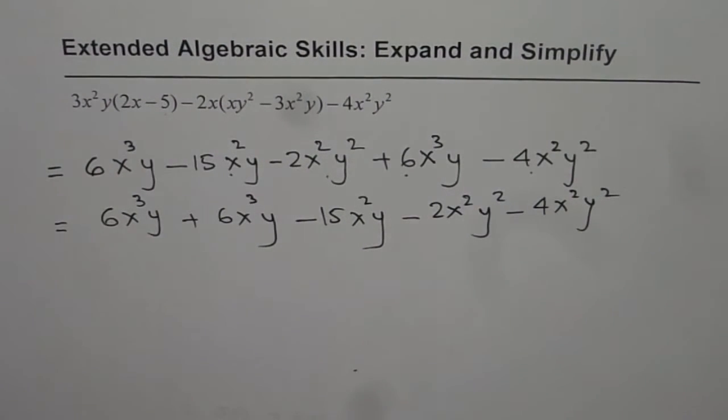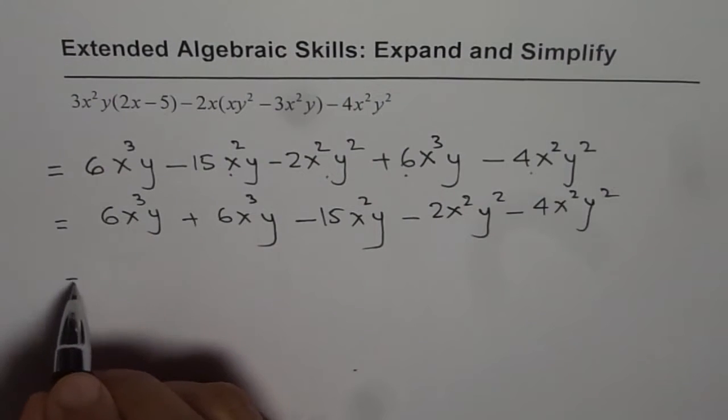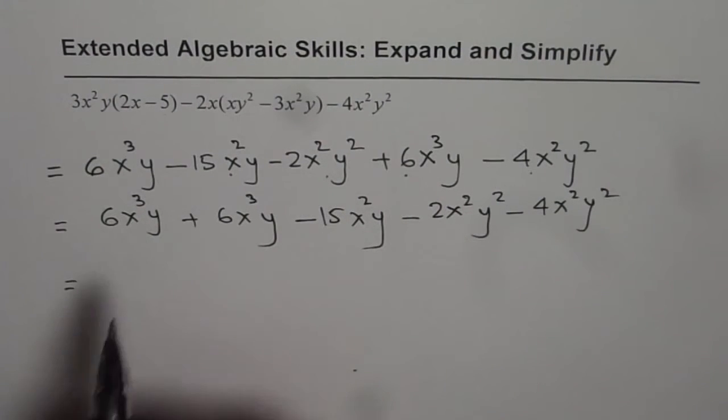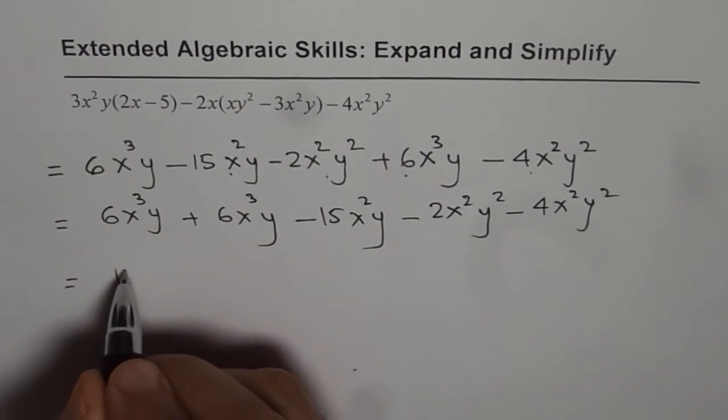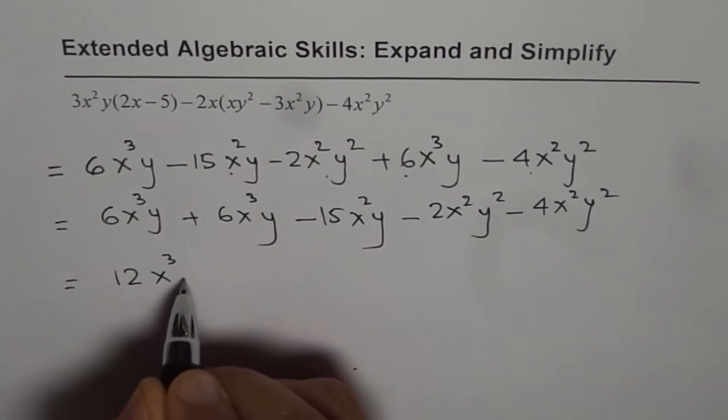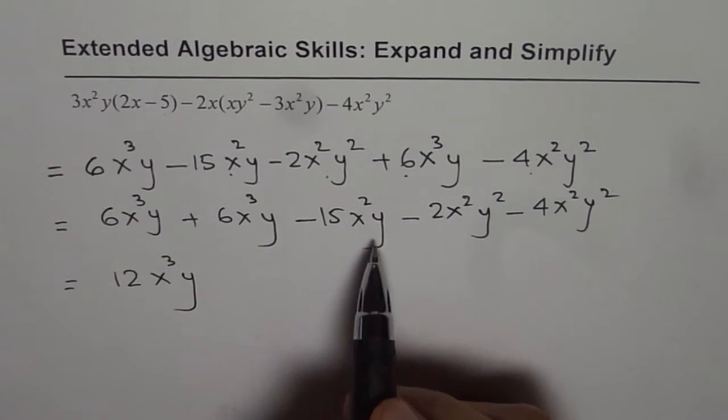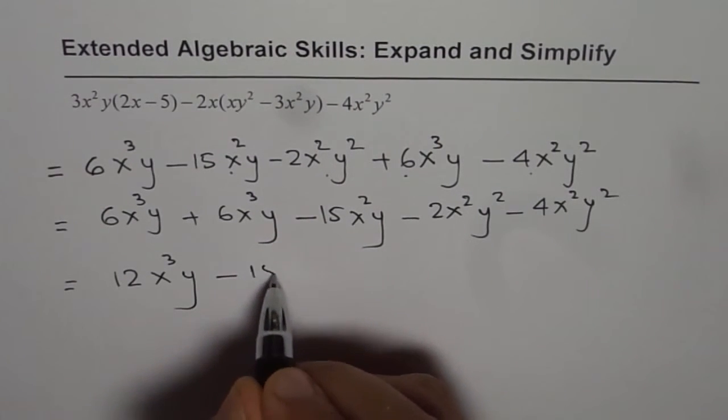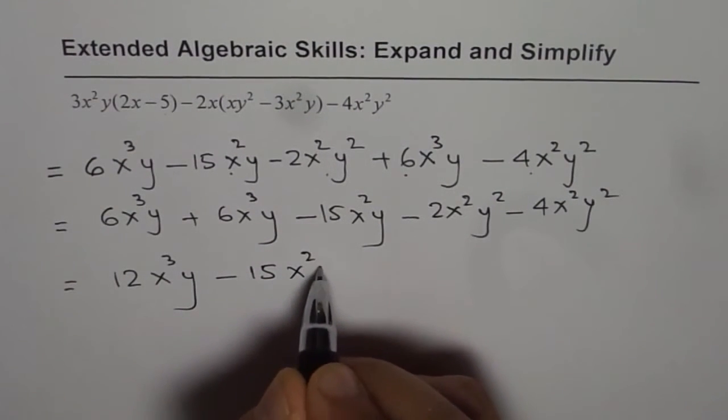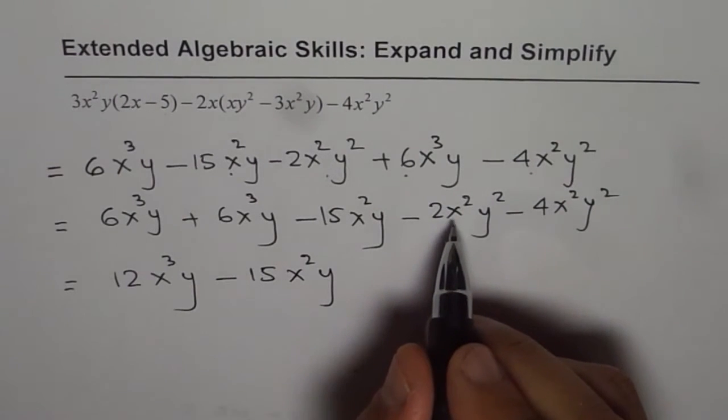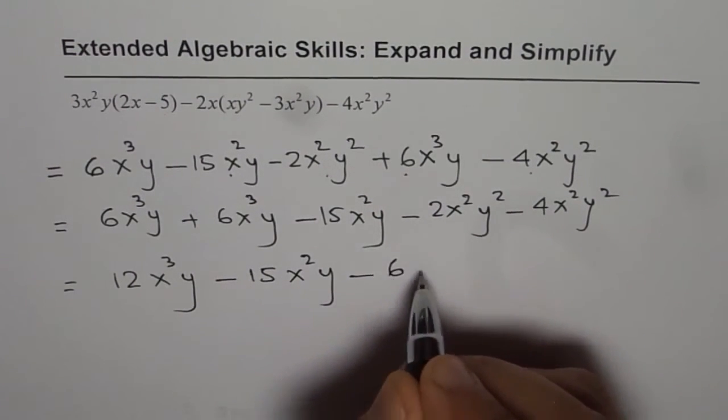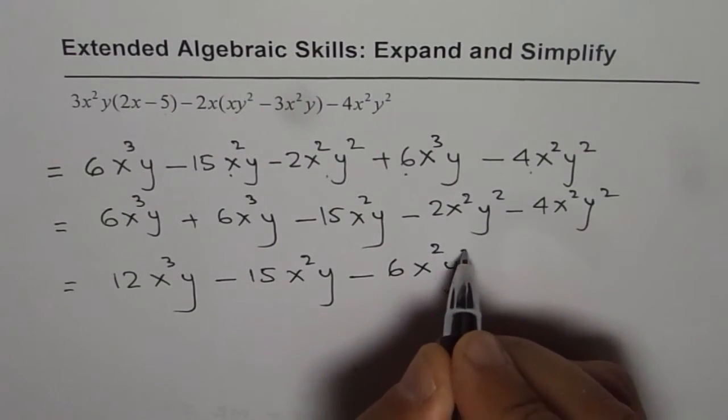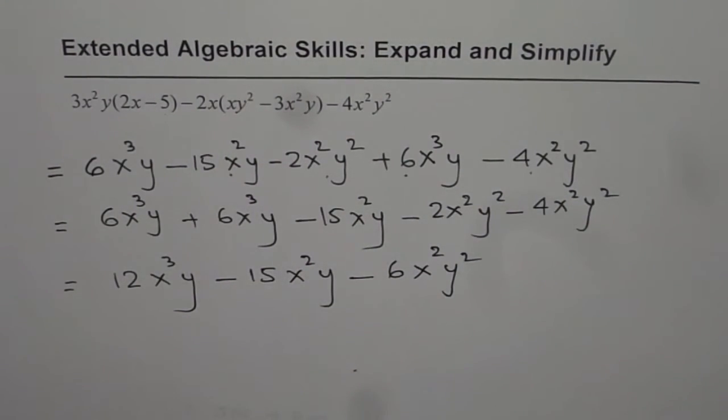So once you put the like terms together you can combine them. So we have 6x³ plus 6x³ as 12x³y. And in this case x²y is alone, so you just copy it as such: minus 15x²y. Minus 2 times x²y² minus 4 makes it minus 6x²y². So that is the result of the given polynomial expression.